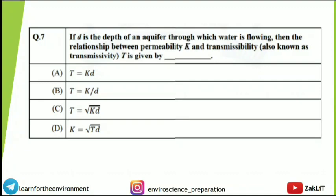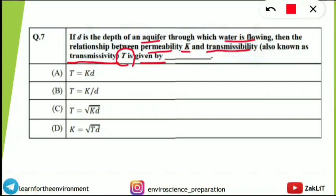Without wasting much time, let's get started. I have taken questions from previous GATE Environmental Science and Engineering papers. We will not only know the correct option but the important concept behind it, so we can answer similar questions in the next examination. The first question: if D is the depth of an aquifer through which water is flowing, what is the relationship between permeability (K) and transmissibility or transmissivity (T)?